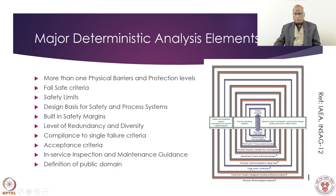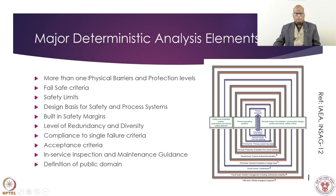There are various levels of protection: normal operation, mitigation, bringing the plant back to normal. These systems provide various levels of safety. The last level ensures radioactivity should not go into the public, so we have an exclusion zone of more than one kilometer. This is a very elegant representation — I have taken it from IAEA INSAG-12 — covering physical barriers and protection levels.